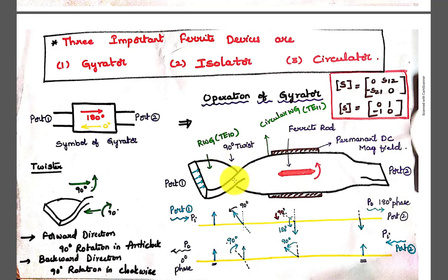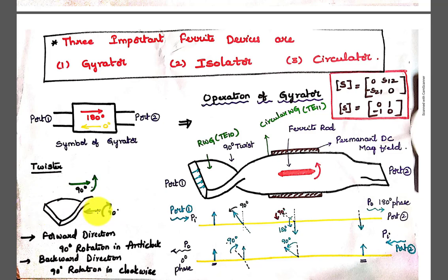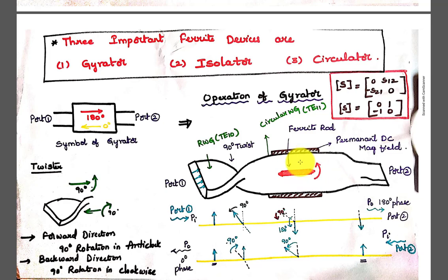A twister is used here. The twister acts as a transition from rectangular to circular along with a phase change of 90 degrees. In the forward direction from port 1 to port 2, it makes an angle of 90 degrees in the anticlockwise direction. If the wave propagates from port 2 to port 1 (backward direction), it makes an angle of 90 degrees in the clockwise direction. The ferrite rod makes an angle of 90 degrees in the anticlockwise direction irrespective of the direction of propagation, because ferrites are a non-reciprocal device.